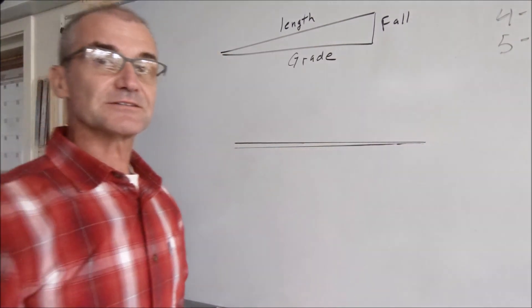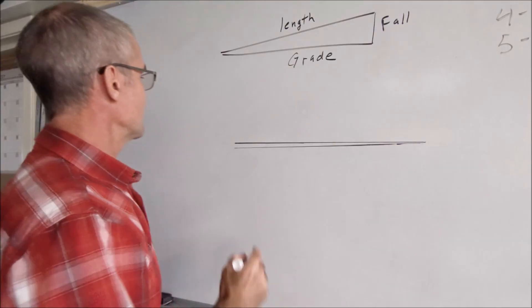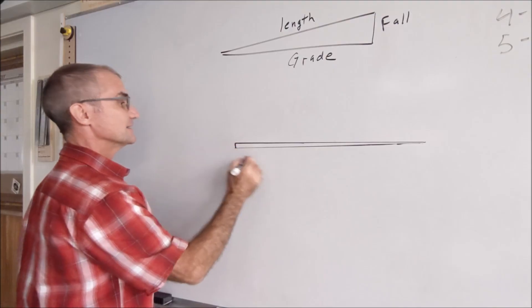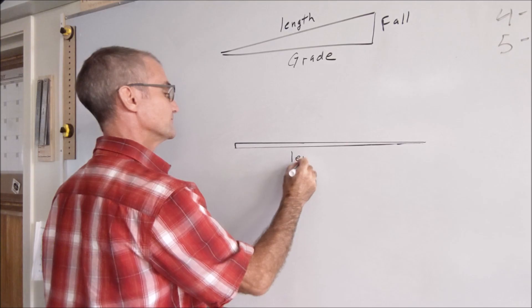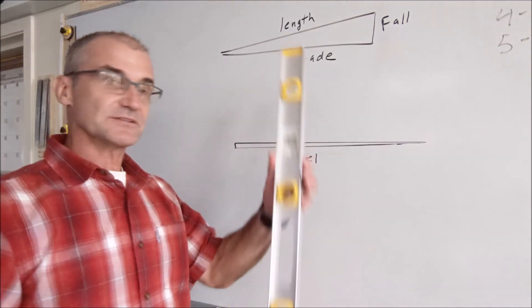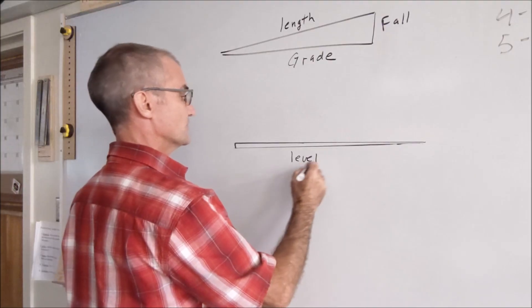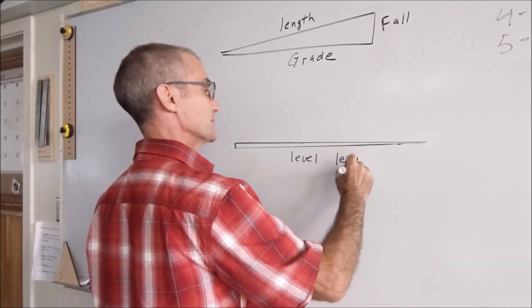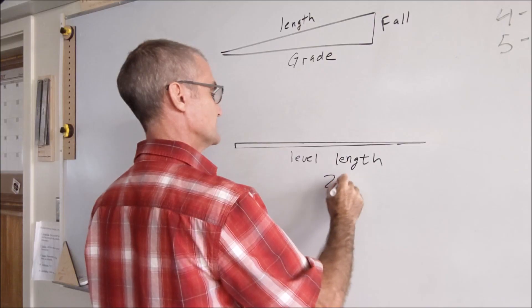Right about there. So there's my triangle. It's a pretty small little triangle. But you can see right here is my height. This is my level. And this is going to be my grade on top. So this is a 2 foot level. So the overall length of my pipe or whatever it is would be 24 inches.